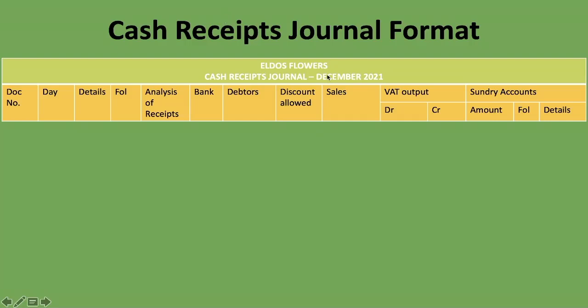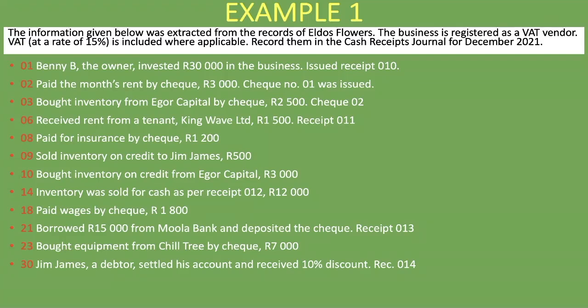Here is the format — Eldos Flowers, Cash Receipts Journal, December 2021. The first transaction: Benny B, the owner, invested 30,000 rand in the business, receipt 010, day 01. The business is receiving money, so it goes into the cash receipts journal. Document number is 010, day is 01, and the detail is the name of the person — Benny B.